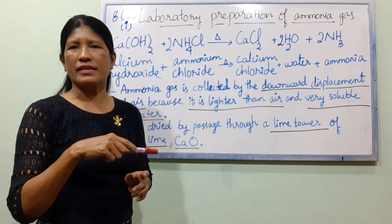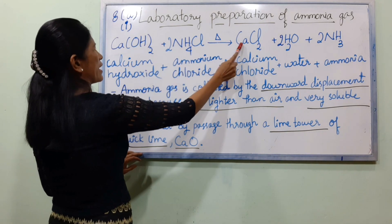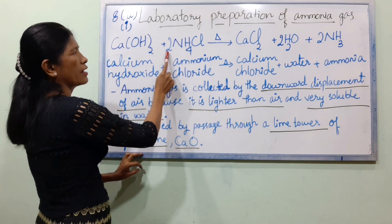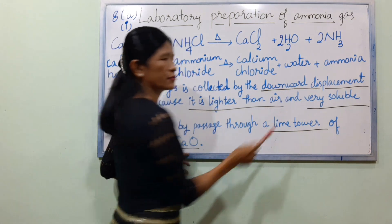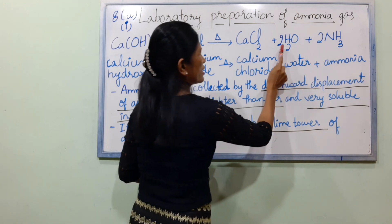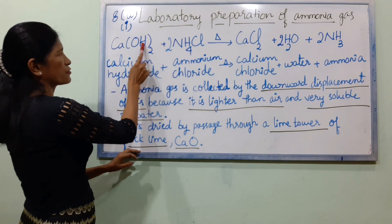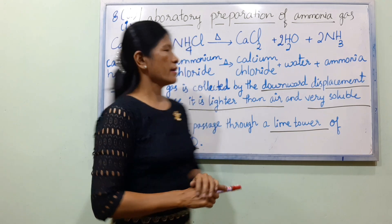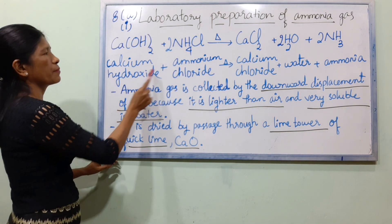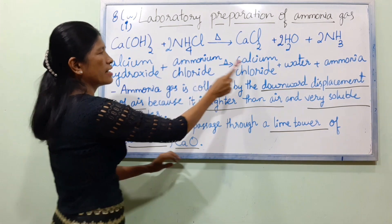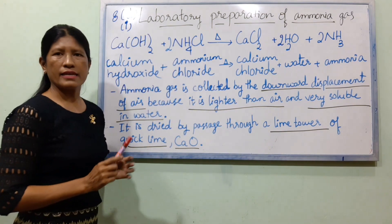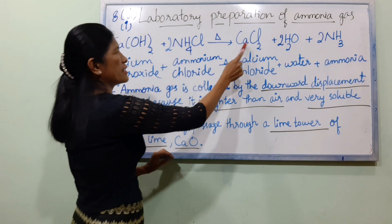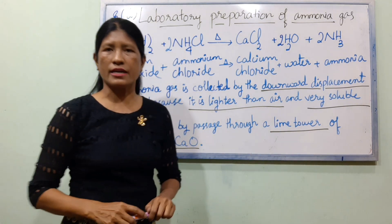The equation is: Ca(OH)₂ plus NH₄Cl gives CaCl₂ plus H₂O plus NH₃. The full balanced equation is: Ca(OH)₂ plus 2 NH₄Cl gives CaCl₂ plus 2 H₂O plus 2 NH₃.